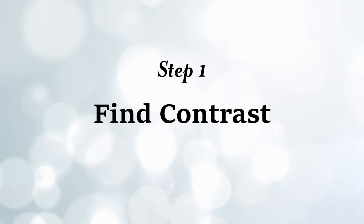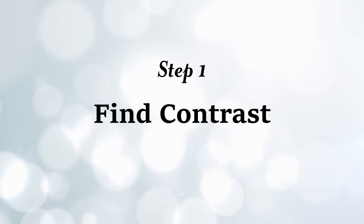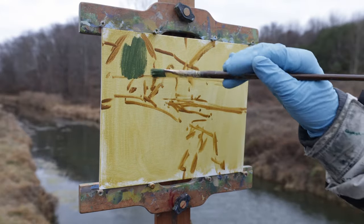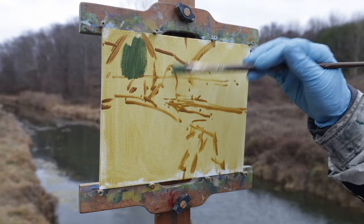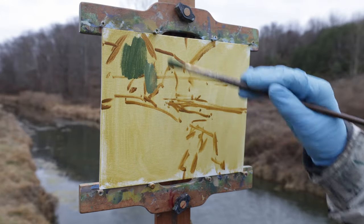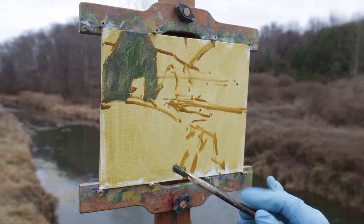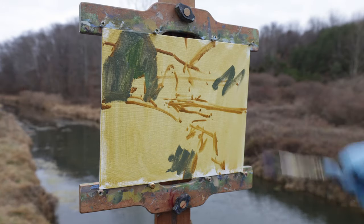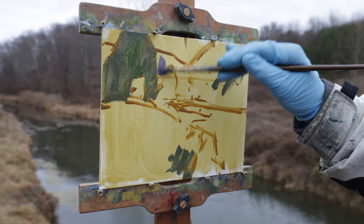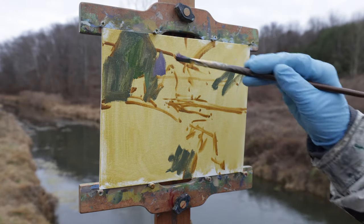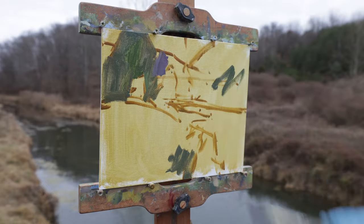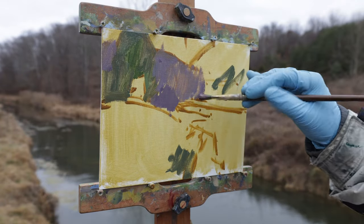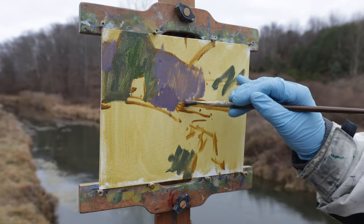Step one: find contrast. You're going to want to find something with a bit of contrast. On a sunny day it's easy — every shade that the light touches has contrast if you can see a shadow. On gray days, we have to be a little more observant. You're going to want to find something that stands out value-wise compared to the things around it.